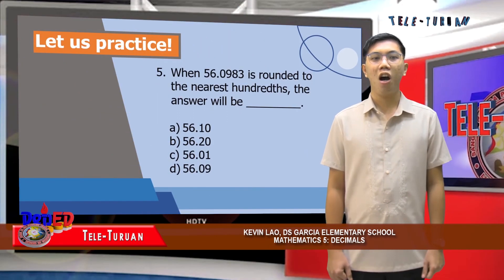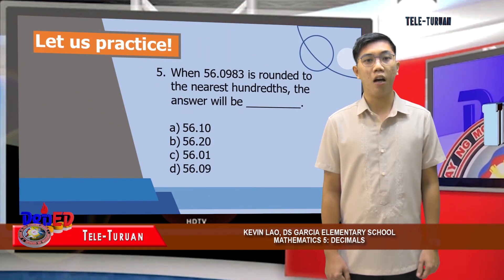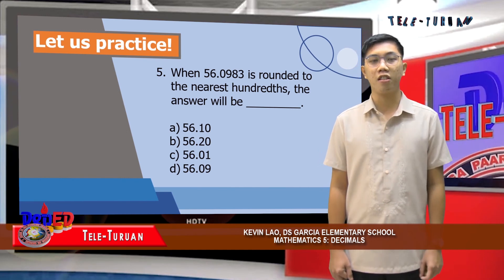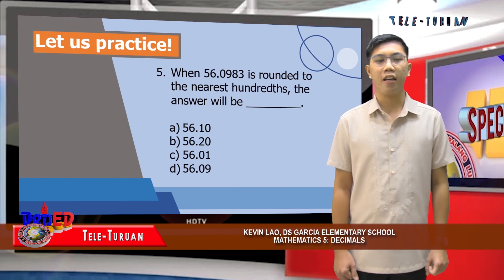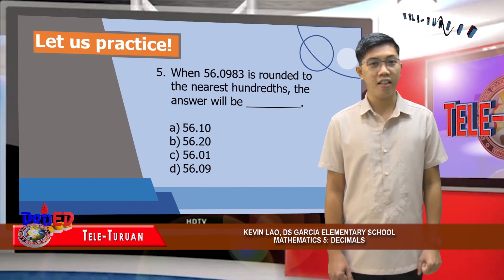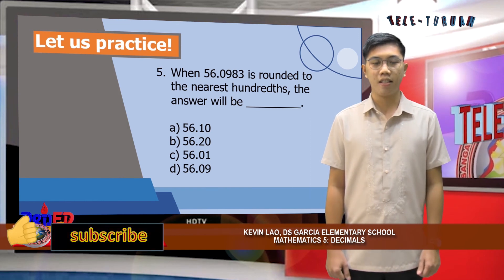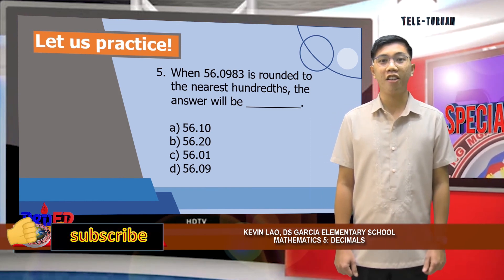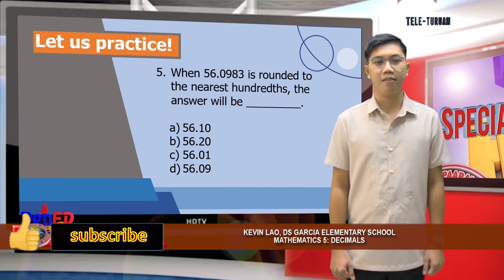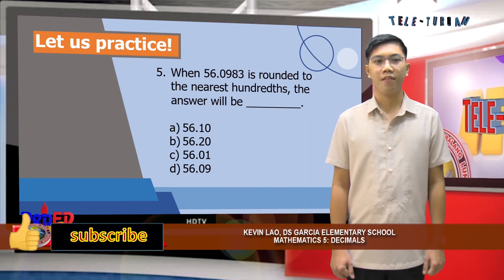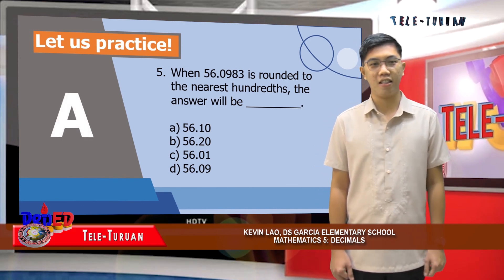For the last number: when 56 and 983 ten-thousandths is rounded to the nearest hundredths, the answer will be blank. The choices are A, fifty-six and ten-hundredths; B, fifty-six and twenty-hundredths; C, fifty-six and one-hundredth; or D, fifty-six and nine-hundredths. The correct answer is A, fifty-six and ten-hundredths.